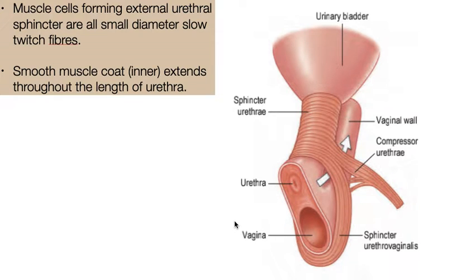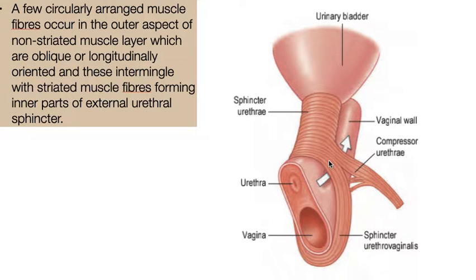The muscles forming the external urethral sphincter are all small-diameter slow-twitch fibers. The smooth muscle coat is inner and extends throughout the length of the urethra. A few circularly arranged muscle fibers occur in the outer aspect of the non-striated muscle layer, which are oblique or longitudinally oriented, and these intermingle with the striated muscle fibers forming the inner parts of the external urethral sphincter.